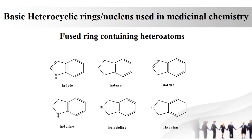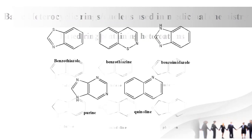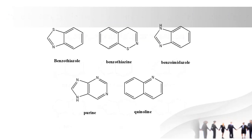Next one is benzofuran. In benzofuran, a benzene ring is fused with furan. Next one is benzothiazole. In benzothiazole, as the name indicates, it contains a benzene and thiazole ring.